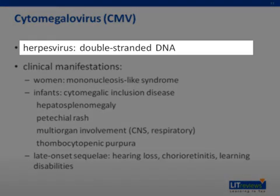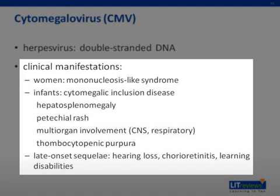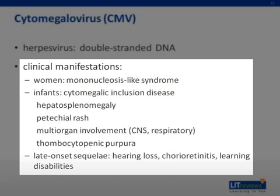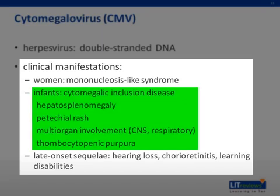CMV, a member of the herpesvirus family and a double-stranded DNA virus, is the most common congenital infection in the developed world, infecting between 0.2 and 2% of all neonates. Approximately 15% of pregnant women with primary CMV infection will have mononucleosis-like symptoms. It is a lifelong infection with periods of relative latency and reactivation. When women experience primary infection in pregnancy, the transmission rate is approximately 40%, while the rate in recurrent infection is only 0.15 to 1%. The risk of transmission is greatest in the third trimester. 10% of infected infants are symptomatic at birth, and 50% of symptomatic infants present with cytomegalic inclusion disease, which includes hepatosplenomegaly, petechial rash, thrombocytopenic purpura, and multi-organ involvement.